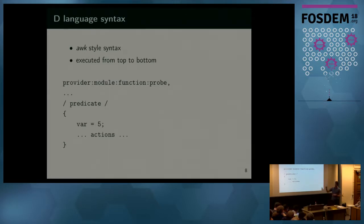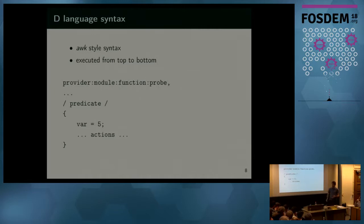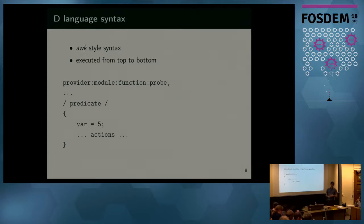You provide a list of probes identified by tuples. You can share action blocks with multiple probes. Then we have a predicate — optional, allowing you to write a D expression. If the expression evaluates to true, the action block is executed in the kernel; if false, we skip it. D-trace actions allow you to work with variables and call C-like functions. Your script is executed top to bottom, and you can have multiple action blocks for the same probe.